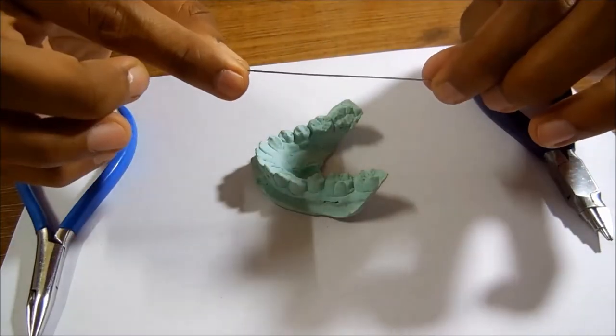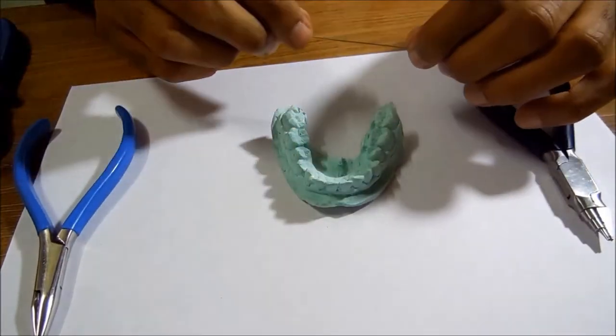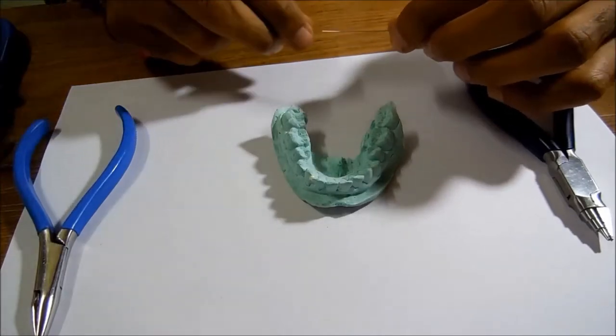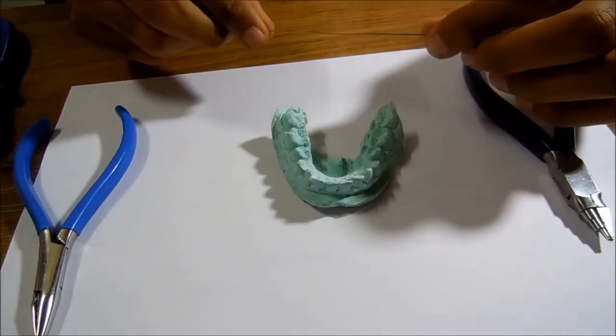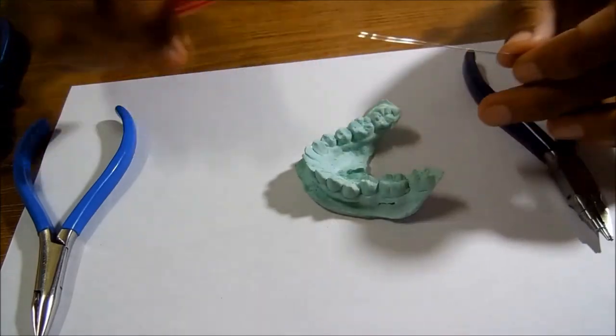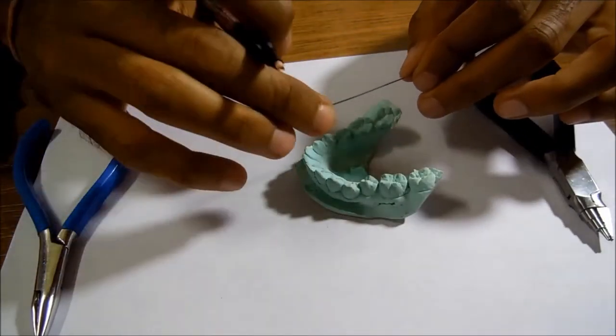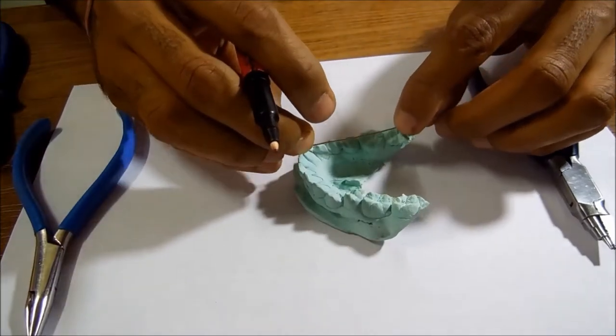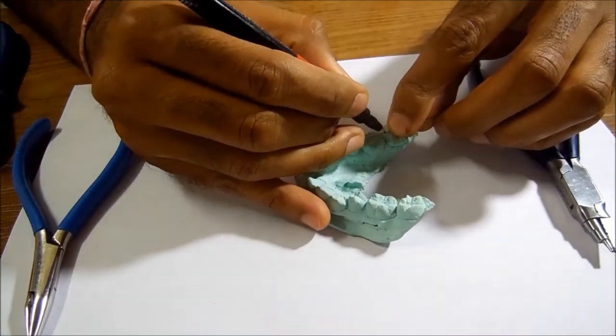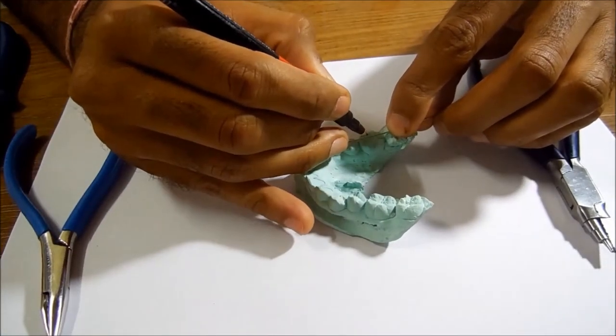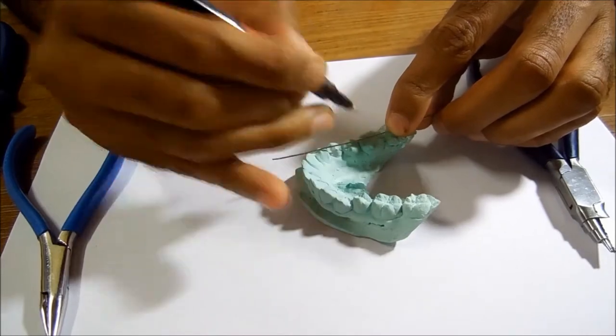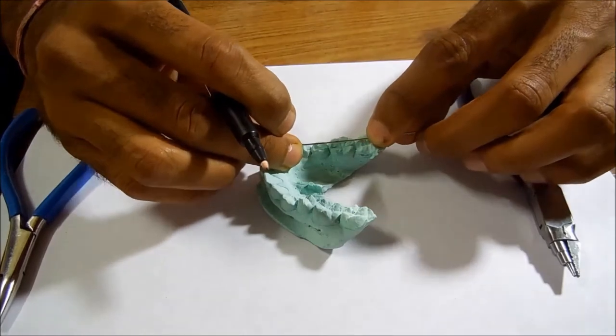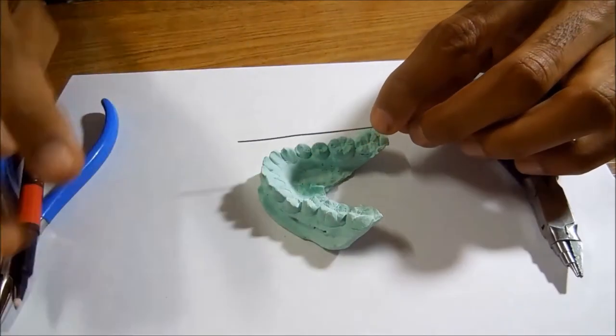This is the fairly straightened stainless steel wire and this is tooth number 46 where we will be preparing our Adams clasp. Now the first thing we have to decide is the length of the horizontal arm of the Adams clasp. There are two schools of thought: either it could be the intercuspal distance or two-thirds of the mesiodistal width of the tooth concerned. I will take it as roughly two-thirds of the mesiodistal width.